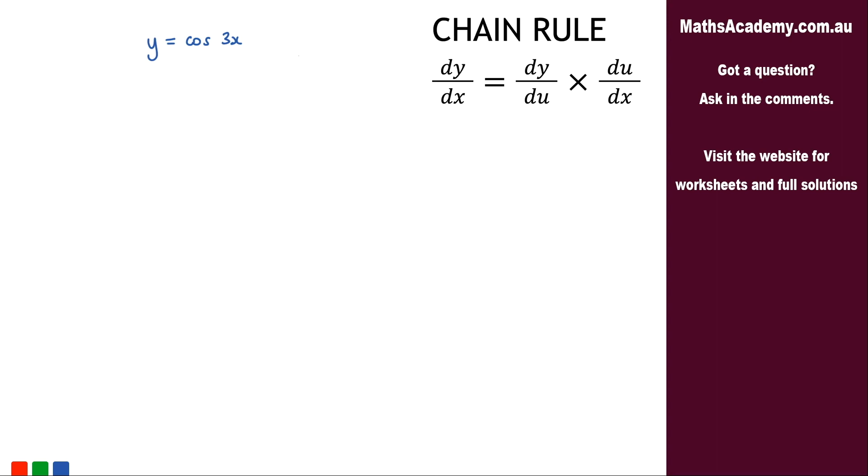For this question we're asked to differentiate y equals cosine of 3x and we're going to be using the chain rule. So I've got the chain rule written over here just for reference.